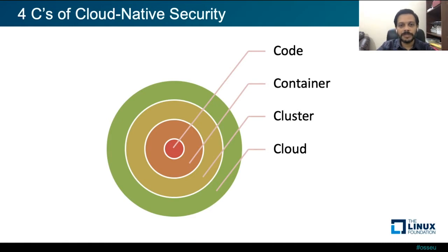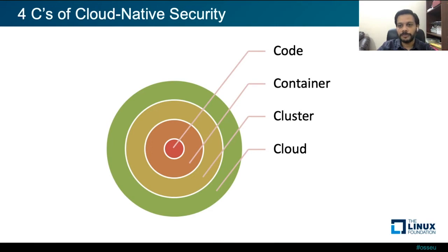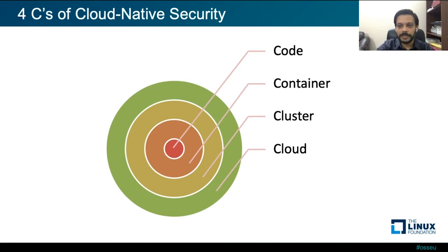The four C's of cloud-native security are based around that. These four layers are code, container, cluster, and cloud. Cloud-native security cannot be managed by just container security alone, so you should ensure that other layers are secure too, such as following secure coding practices, checking for code vulnerabilities during development, maintaining security for containers and clusters such as Kubernetes, Docker, Swarm, or any other platform you use.